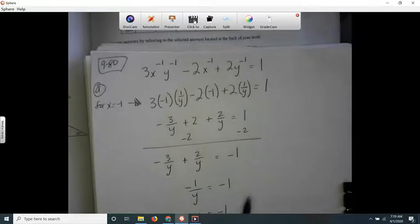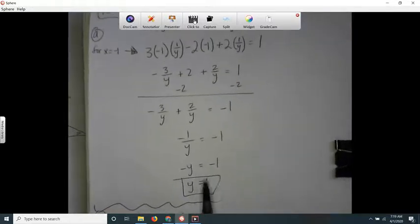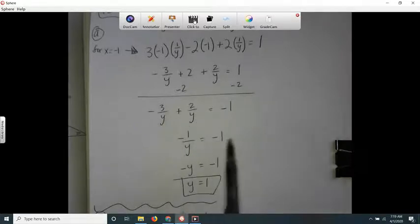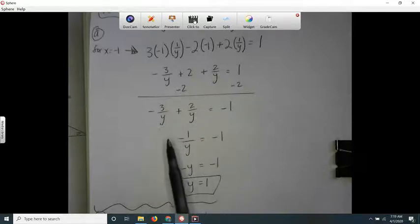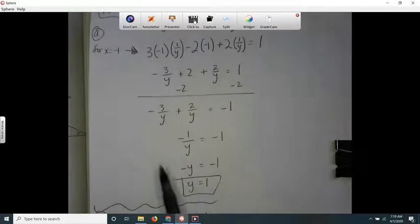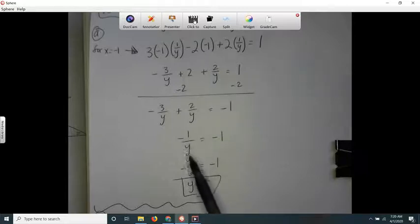Then I just did fraction math so I have a common denominator, which gave me negative 1 over y. And then I know that if negative 1 over y is negative 1, I can flip both sides, like the reciprocal of this is going to equal the reciprocal of this.